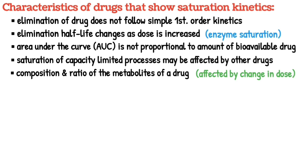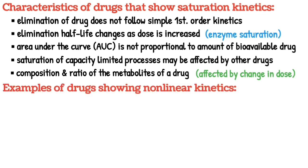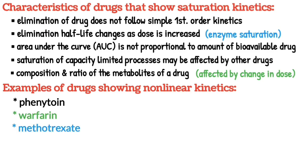Fifth, the composition and ratio of the metabolites of a drug may be affected by a change in the dose. Examples of some drugs showing non-linear kinetics include phenytoin, warfarin, methotrexate, carbamazepine, and acetaminophen.